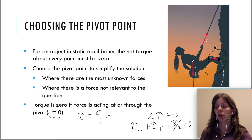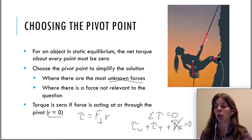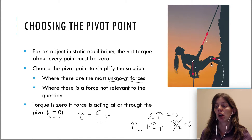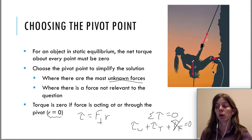So if you had several unknown forces at a location, you definitely want to pick the pivot point there, because they will cancel out of the equation. Other times you may have to pick that pivot point where there's a force not relevant to the question. It could be possible that the problem asks you nothing about tension and you just don't care about it. If the problem wants you to solve for force F, then you can't pick the pivot point there because F will cancel out. So if you don't care about T, pick the pivot point at T — that way T cancels out of the equation and you can solve for F.